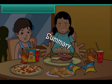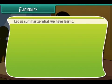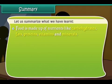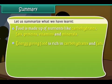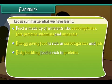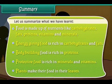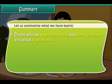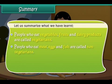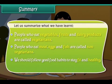Summary: Food is made up of nutrients like carbohydrates, fats, proteins, vitamins and minerals. Energy giving food is rich in carbohydrates and fats. Body building food is rich in proteins. Protective food is rich in minerals and vitamins. Plants make their food in their leaves. People who eat vegetables, fruits and dairy products are called vegetarians. People who eat meat, eggs and fish are called non-vegetarians. We should follow good food habits to stay fit and healthy.